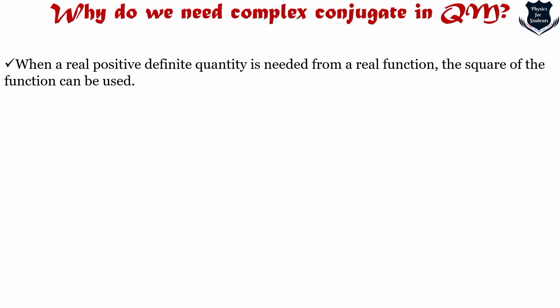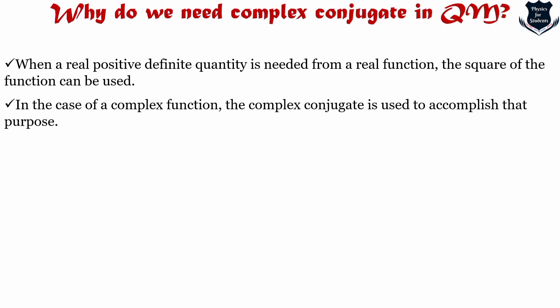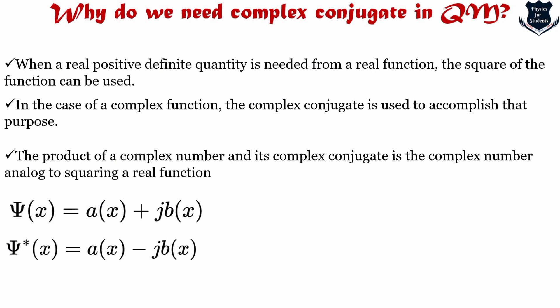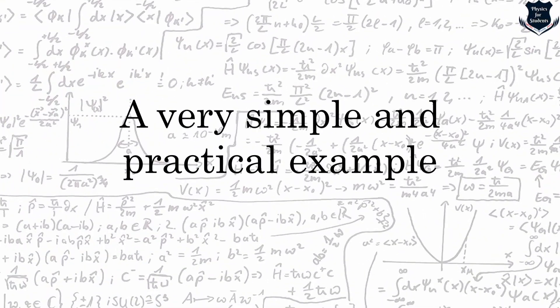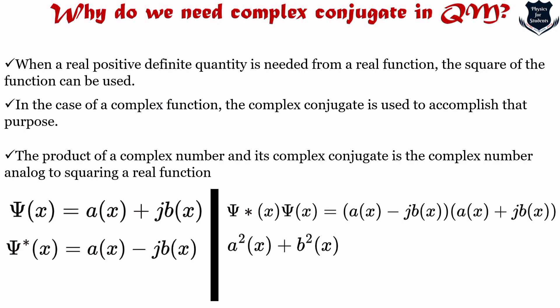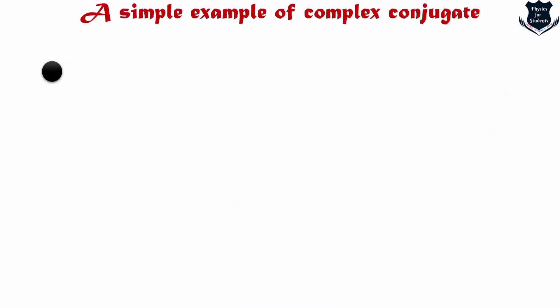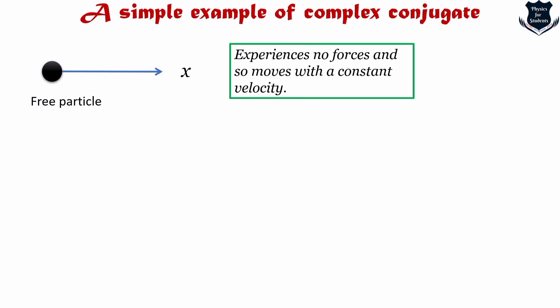When a real positive definite quantity is needed from a complex function, the complex conjugate is used and the product of a complex number and its complex conjugate is analogous to squaring a real function. Now I will demonstrate a very practical and simple example. Imagine a free particle — a particle experiencing no force — moving along the x direction with constant velocity.